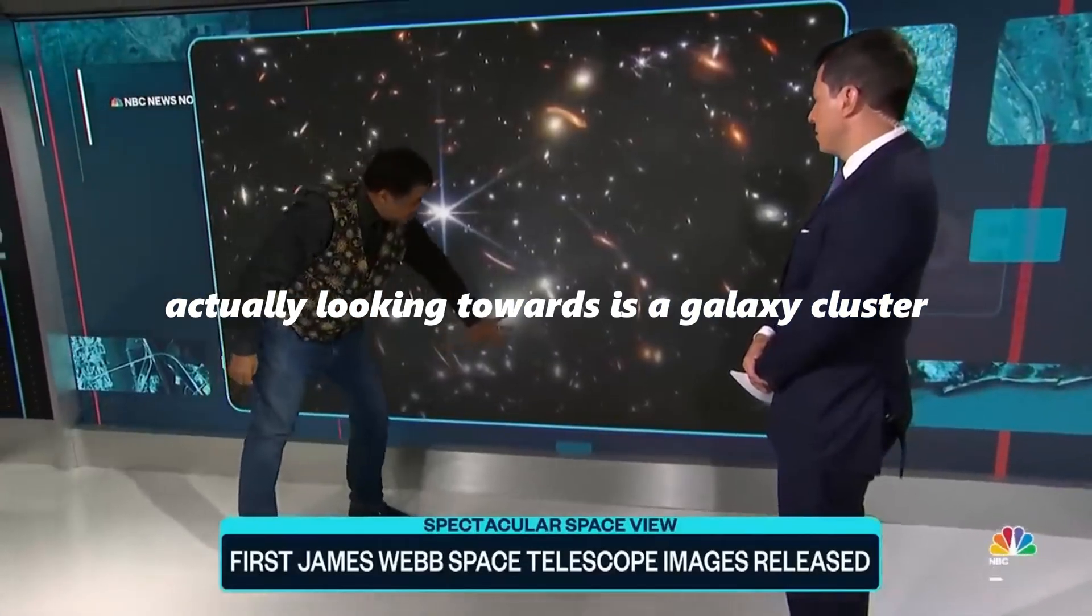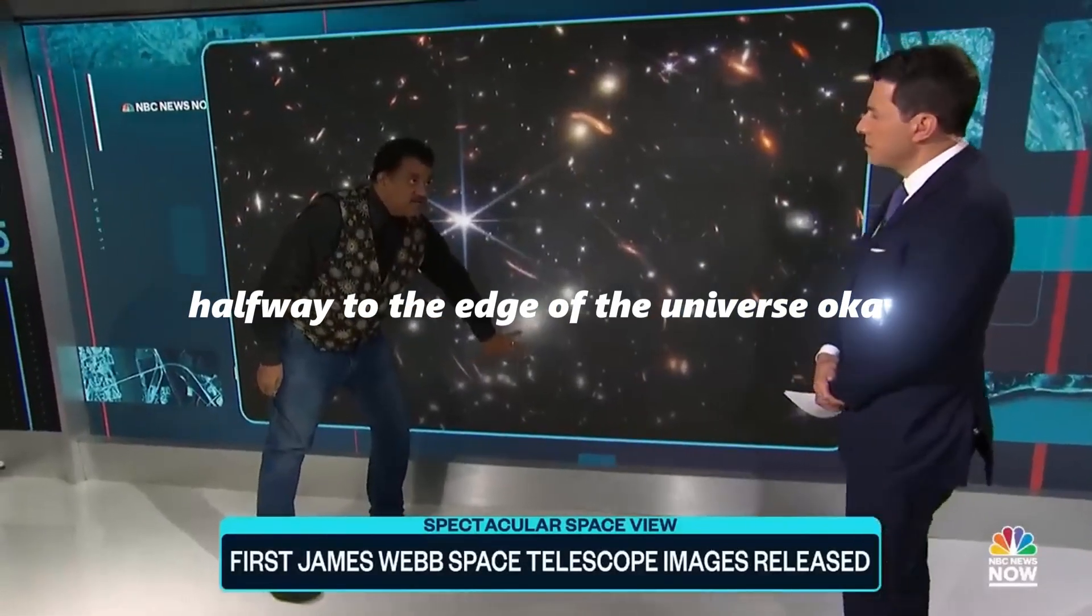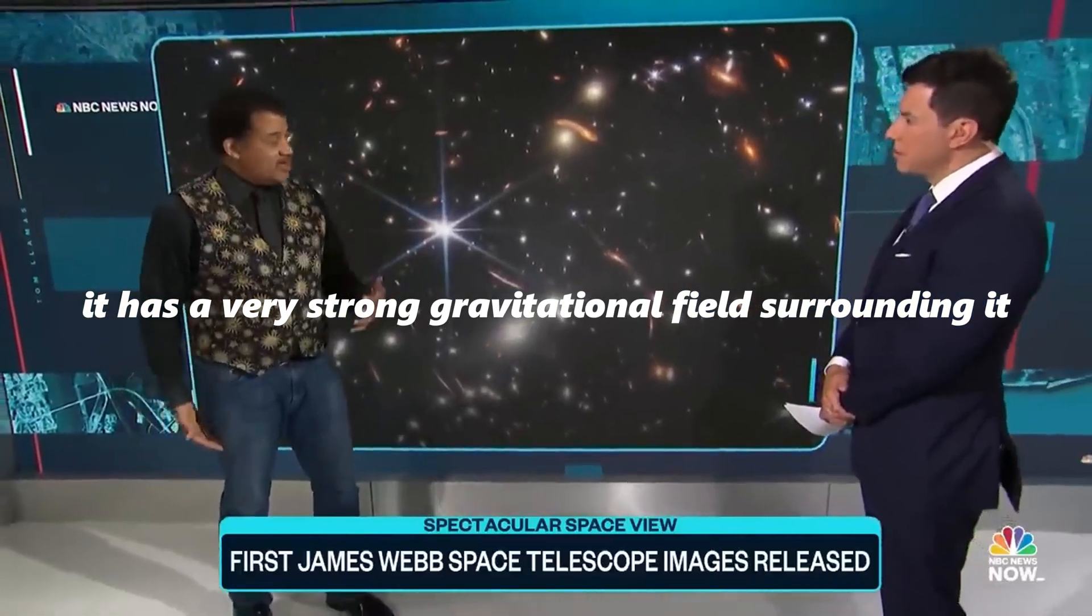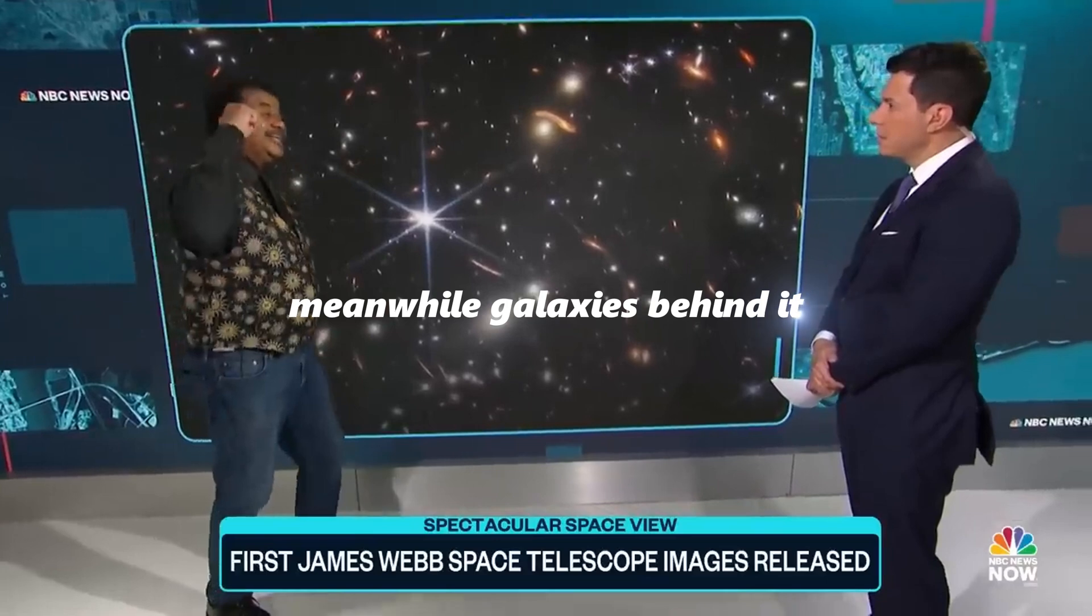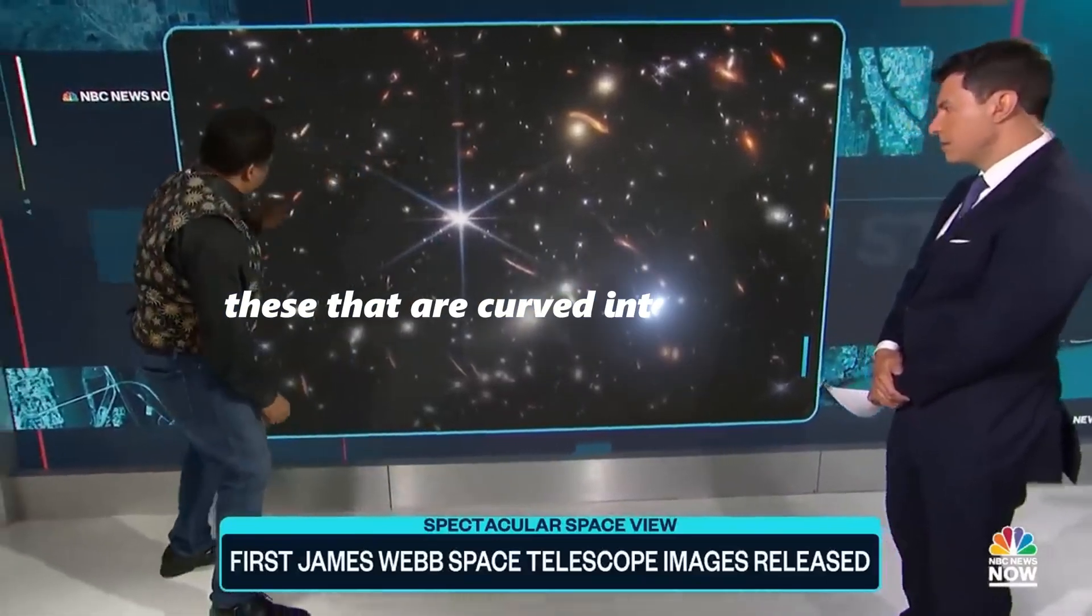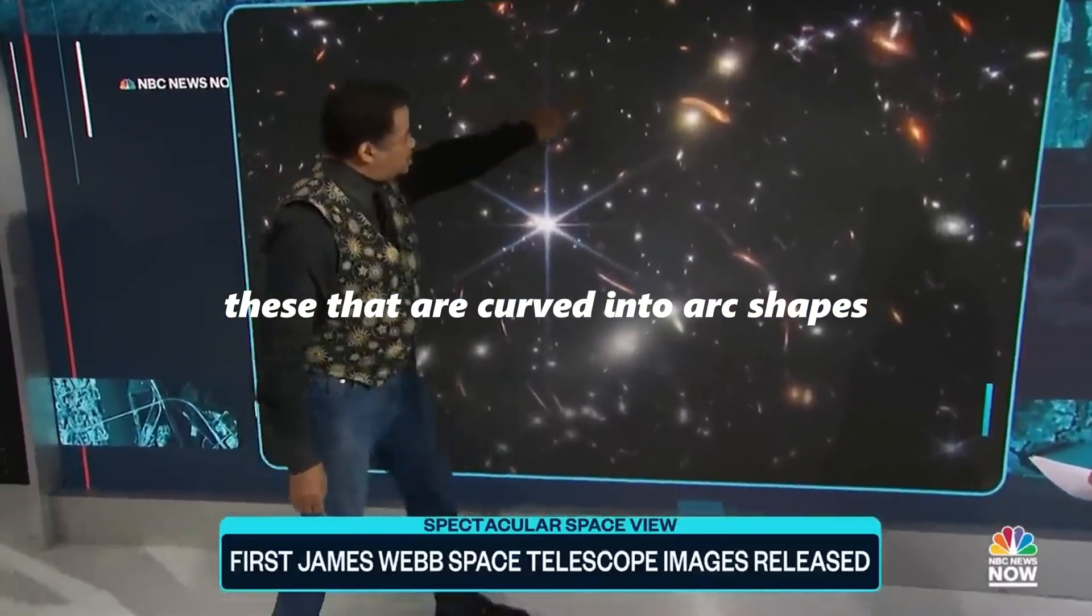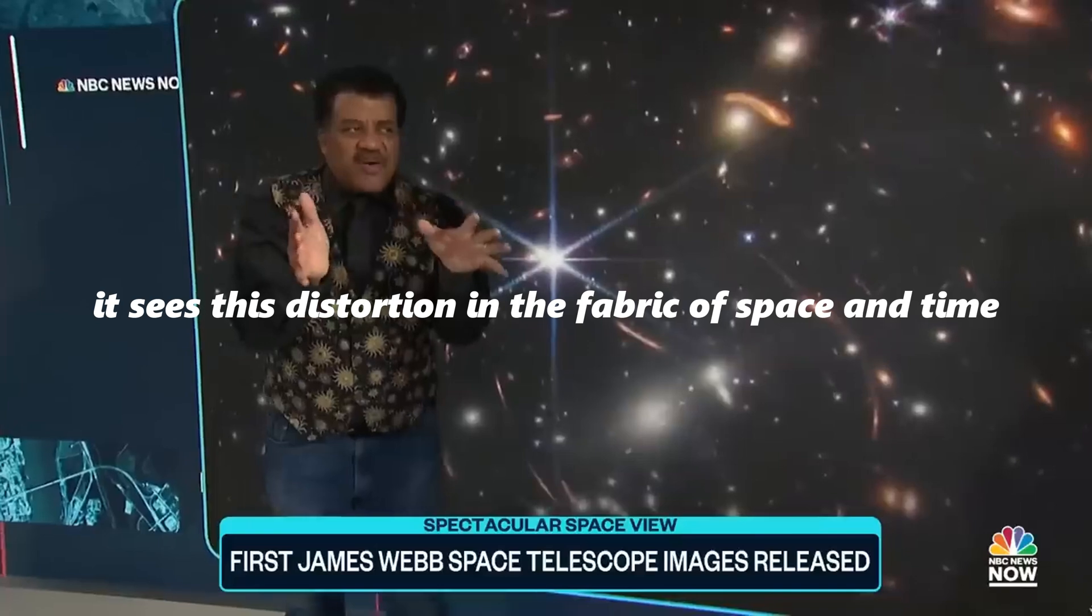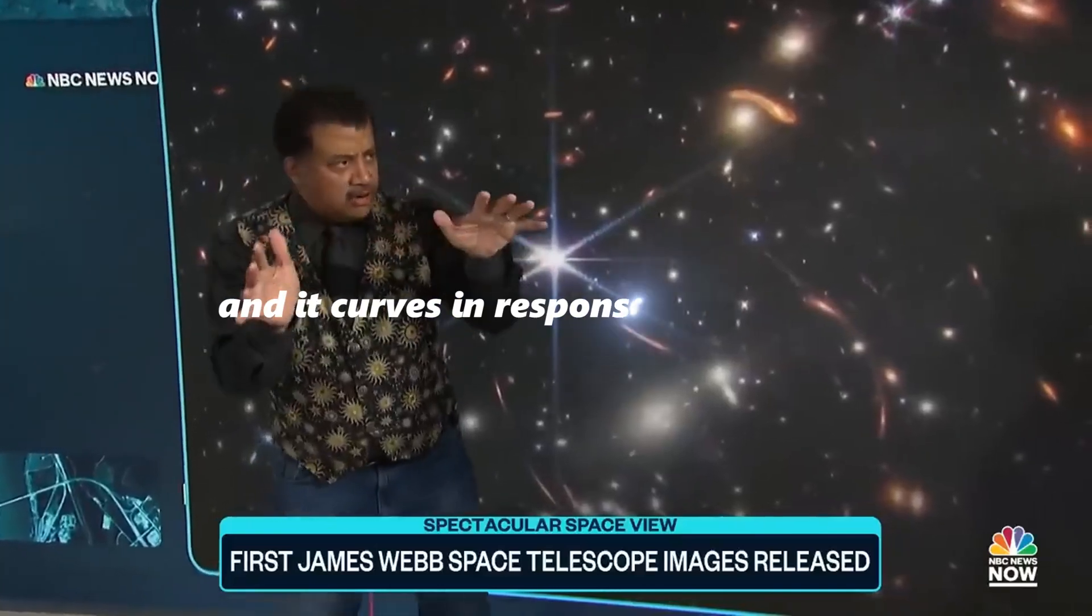We're actually looking towards a galaxy cluster halfway to the edge of the universe. It has a very strong gravitational field surrounding it. Meanwhile, galaxies behind it that are curved into arc shapes are passing through the universe, minding their own business. It sees this distortion in the fabric of space and time and curves in response to it.